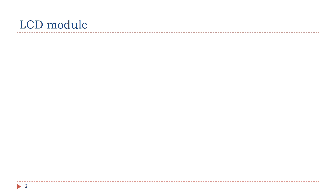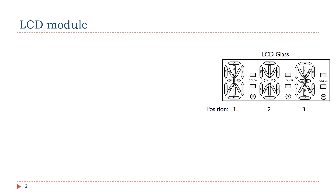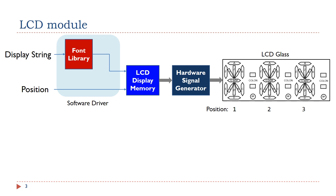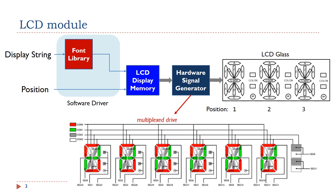An LCD module has four major components: LCD glass, LCD hardware signal generator, LCD display memory, and software driver. The hardware signal generator uses a special hardware technology called a multiplex drive to reduce the number of pins required to drive an LCD glass. Refer to the book for details.